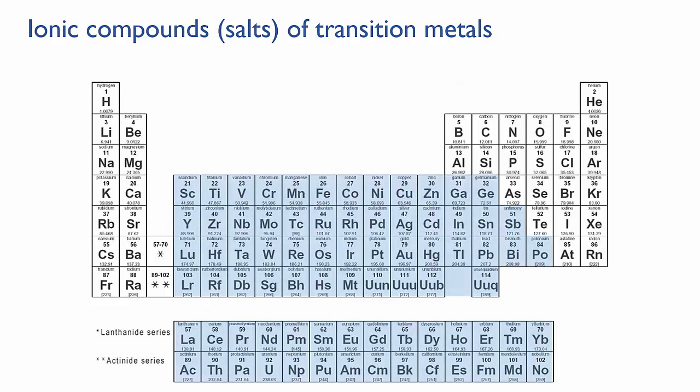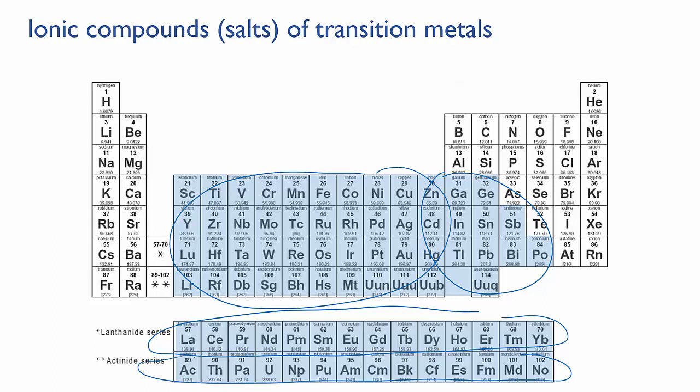Now that you know how to name and write the formulas for ionic compounds, we'll look at a subset of these: the salts of the transition metals, the post-transition metals, and the lanthanides and actinides.